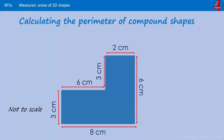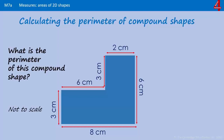Calculating the perimeter of a compound shape is the same as calculating the perimeter of a single shape. If we reintroduce our friend Percy Perimeter — the perimeter is just how much you would have to walk if you walked around the outside of that shape. So Percy starts here, and he's going to walk two centimeters along the top.